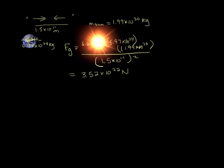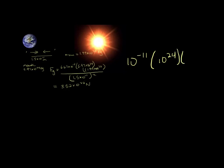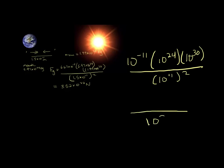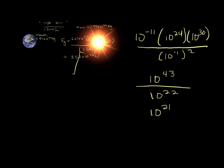Let's check if that answer is reasonable using laws of exponents. We had 10 to the negative 11, times 10 to the 24th, times 10 to the 30th, divided by 10 to the 11th squared, which is 10 to the 22nd on the bottom. On top: negative 11 plus 24 plus 30 is 43, giving 10 to the 43rd. Dividing: 43 minus 22 is 21, so we should get something on the order of 10 to the 21. We got 10 to the 22 — very similar, so that is a reasonable answer.